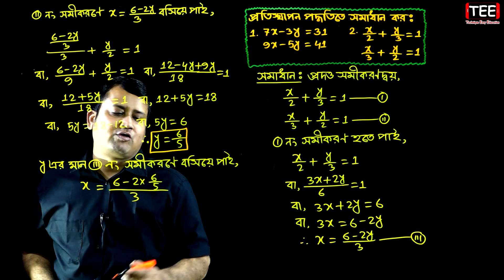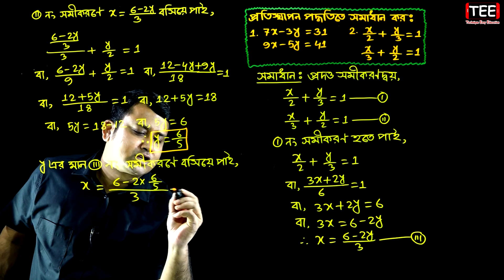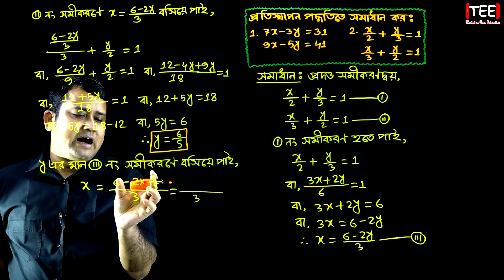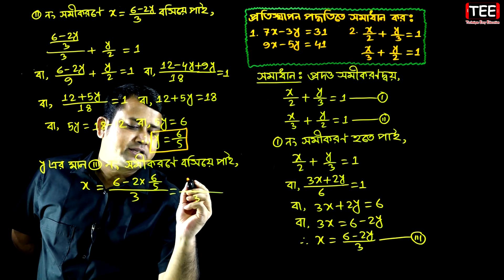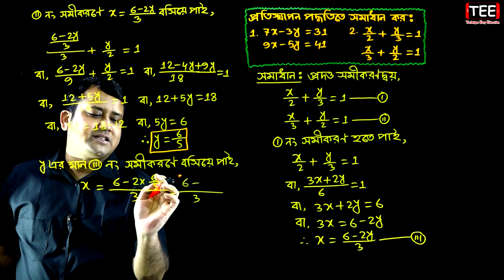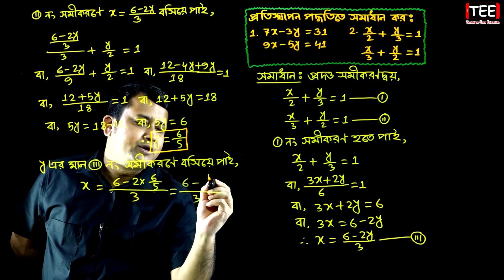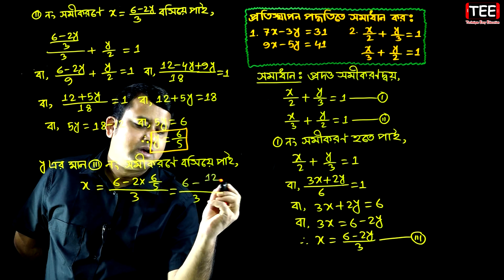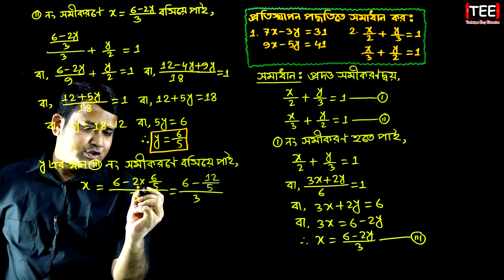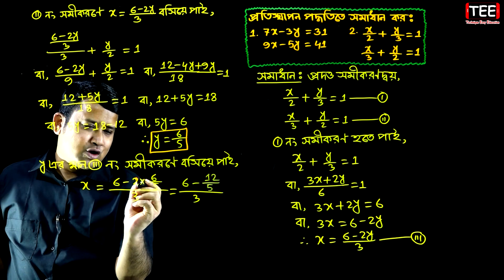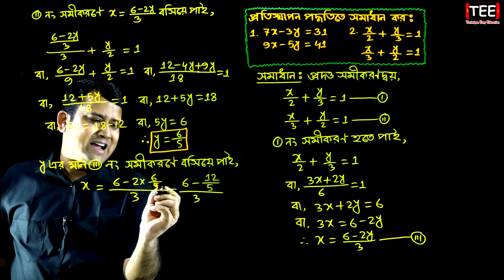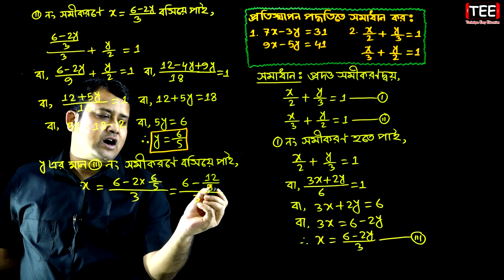Now let's do this calculation. We will count 6 minus 2 and 6, which is 12, which is 5. Let's see how many times are the 2 and 6 — which means 12, which means 5.